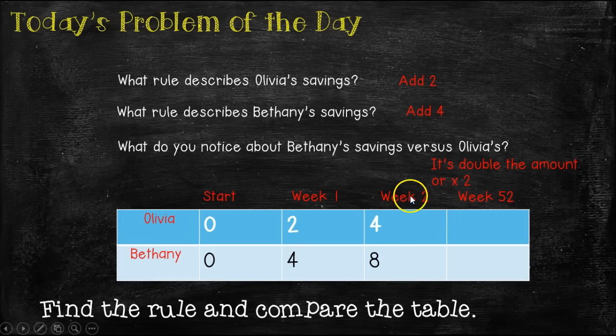So if we kept this table going and we said in week two, if we're adding two, because that's Olivia's rule, two plus two is four, and Bethany's rule is adding four. So four plus four is eight.